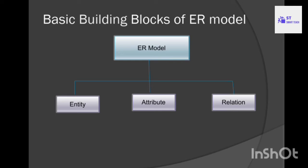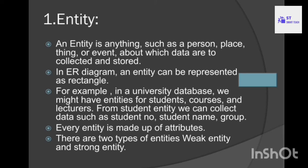The basic building blocks of the ER model — to develop the ER model and ER diagram — there are three components: entity, attribute, and relation. Let's see them one by one. An entity is anything in the world, such as a person, place, thing, or event.